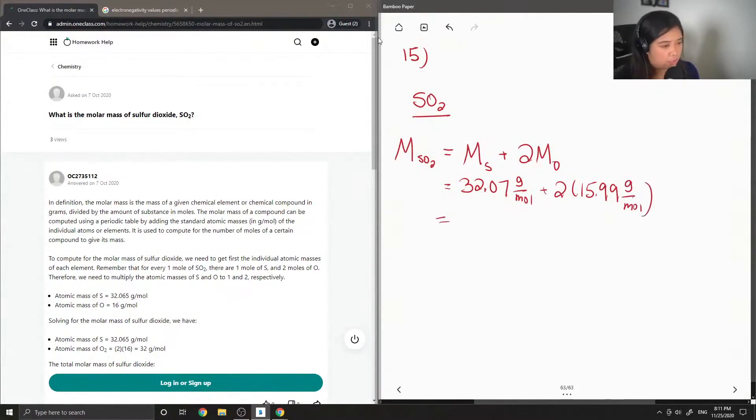Adding these values up, we end up getting 64.07 grams per mole for the molar mass of sulfur dioxide.